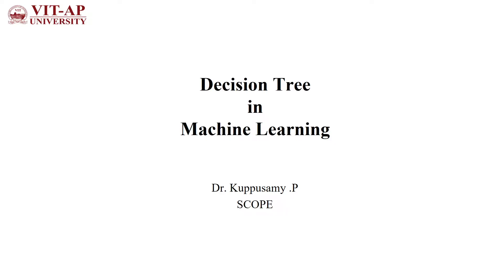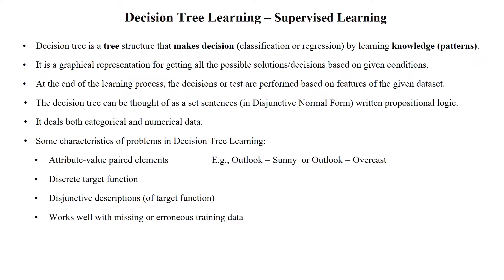This video explains the decision tree machine learning algorithm. The decision tree is one of the supervised learning methods which follows a tree structure. The tree structure makes decisions based upon classification or regression problems by learning the patterns from the attributes.